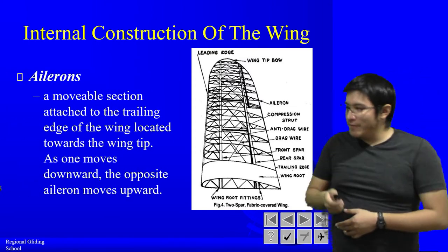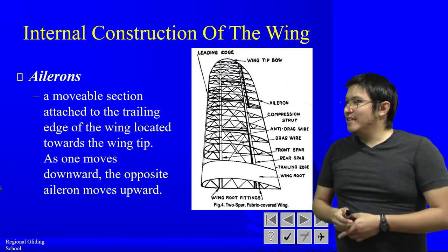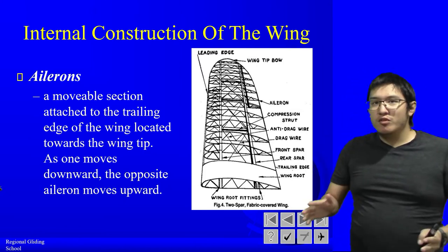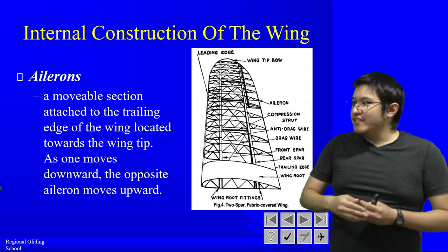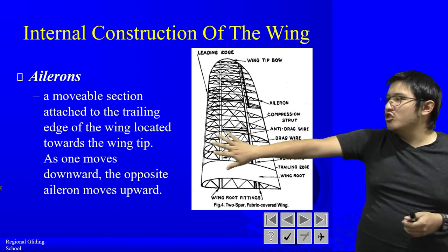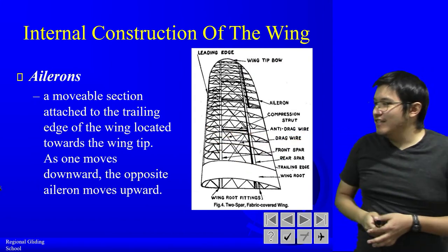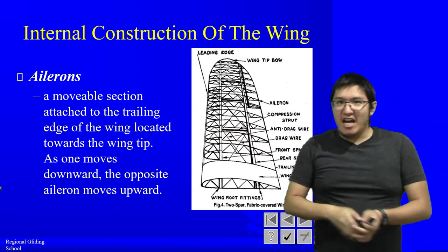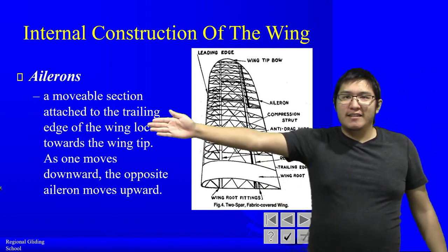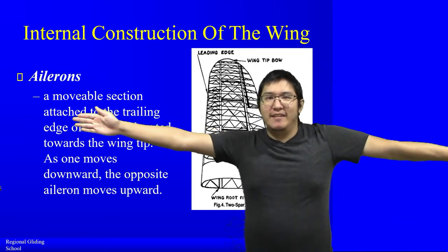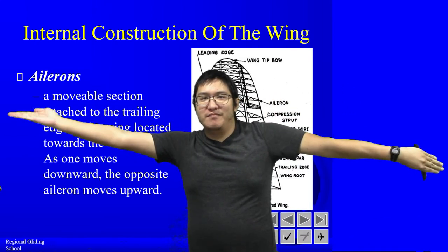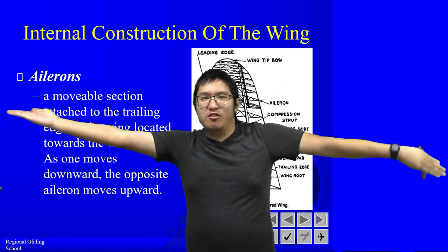Ailerons. Some of you may be familiar with ailerons. They are a movable section attached near the trailing edge of the wing. As one moves upward, the other tends to move downward — they alternate.